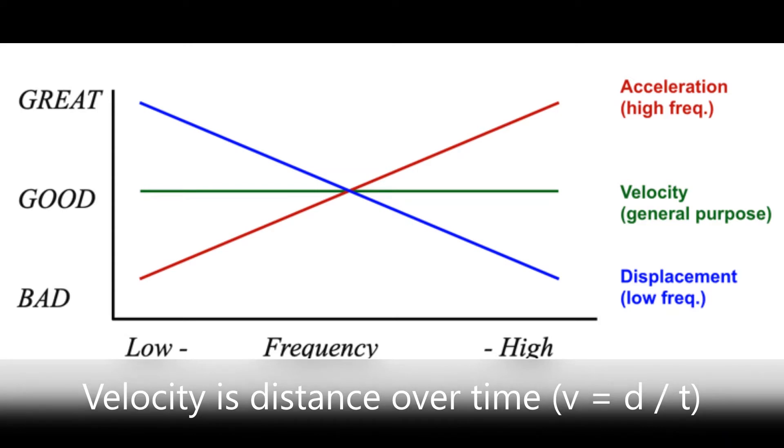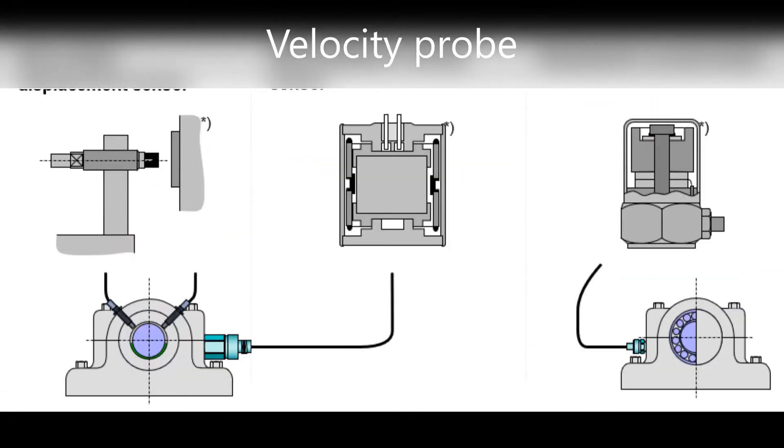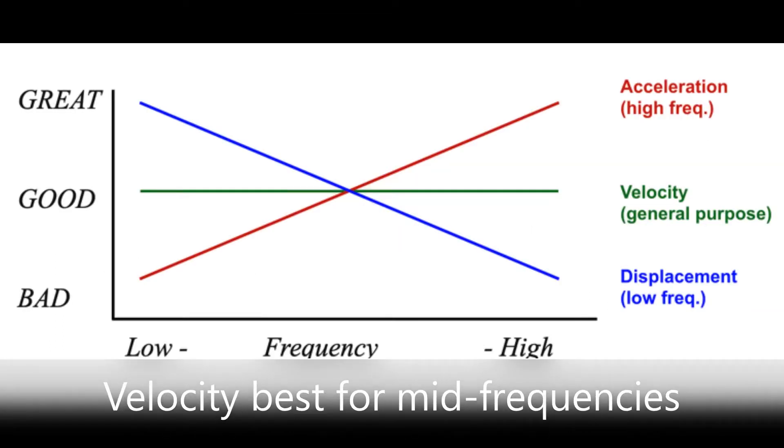Number two: velocity is the distance an object moves over a given time. In the past it was measured with a velocity probe, but the moving parts wear quickly and break. No longer is this common. Velocity is best for measuring the mid frequencies.